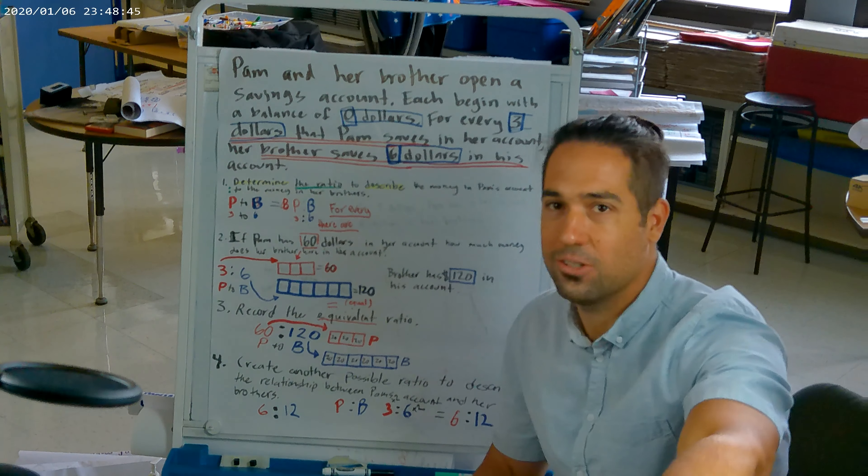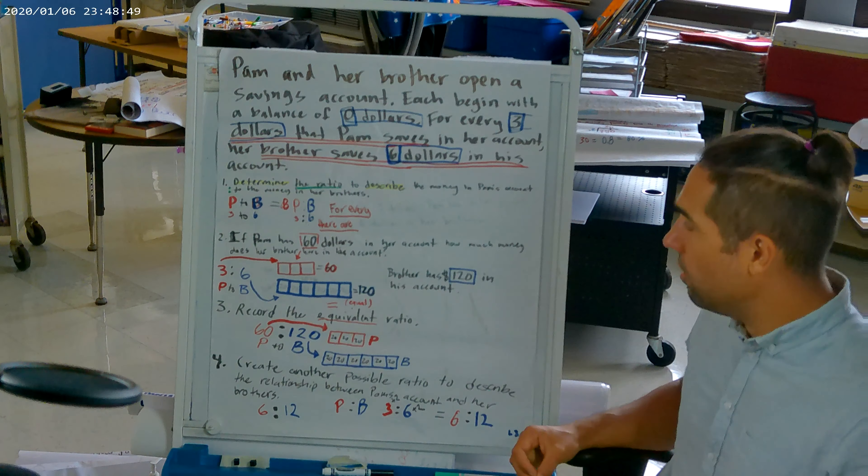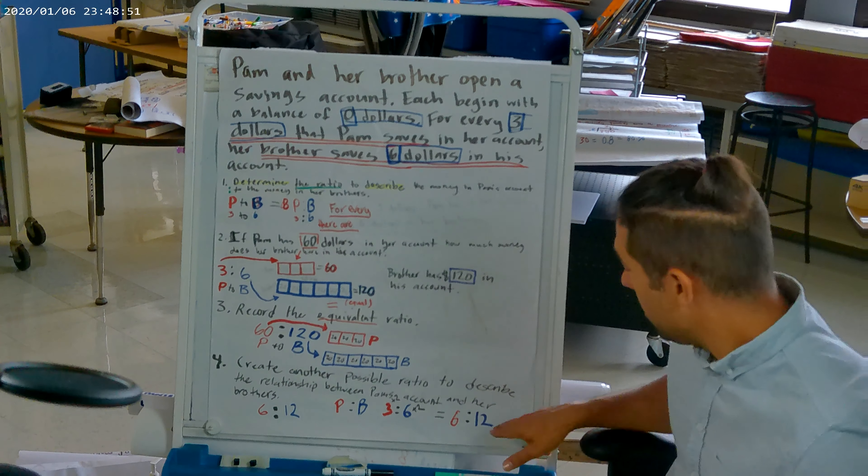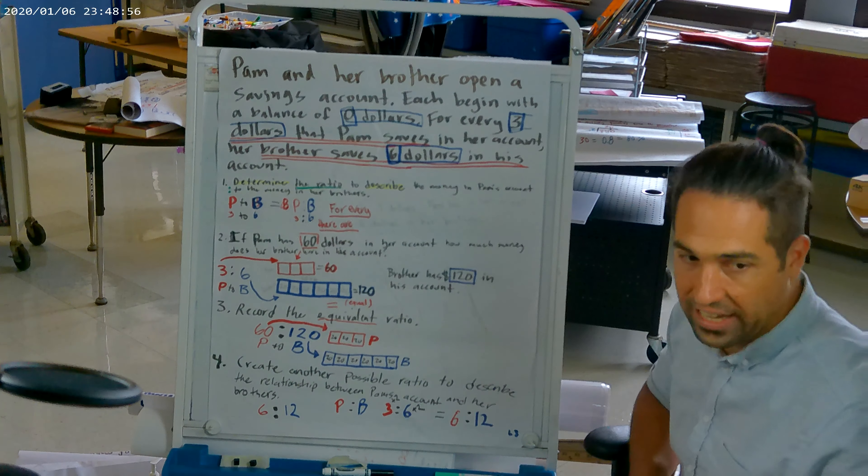There we go, perfect. Okay, so this is our lesson on ratios for lesson three. This is literally the exit ticket, lesson three exit ticket.